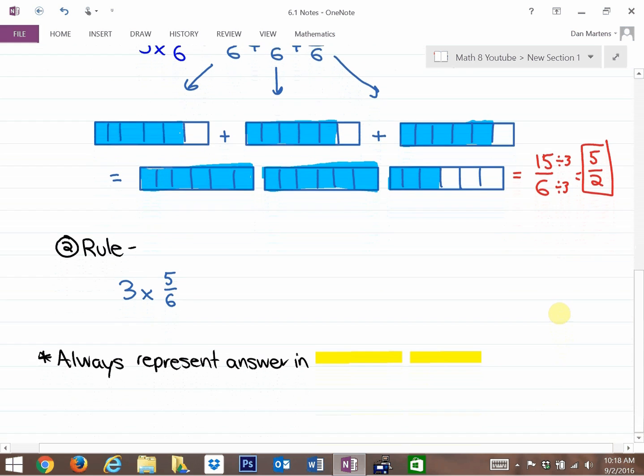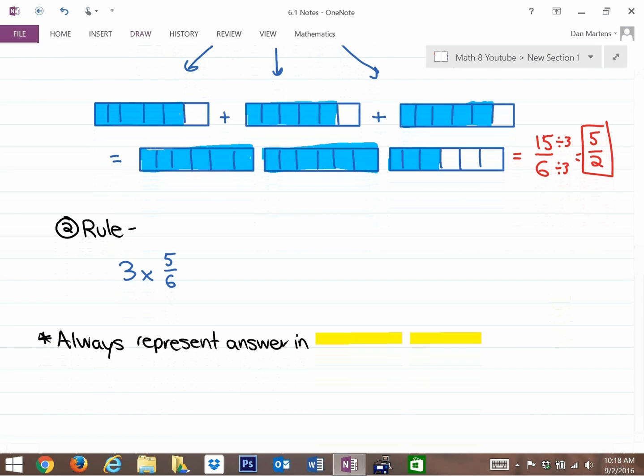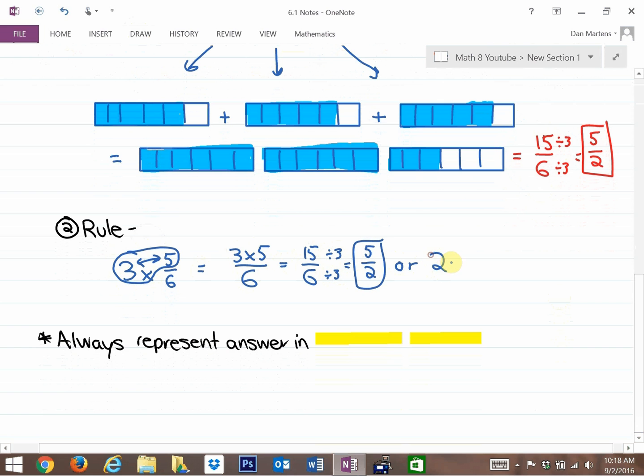A second method, beyond using diagrams to understand multiplying a whole number by a proper fraction, you can use a rule. And the rule that we've learned is, and you might want to think about how it relates to this 15 over 6, is we notice that all we have to do is multiply the whole number by the numerator and leave the denominator alone, because we have three groups of 5 sixths. We're going to multiply these two here. And that becomes 15 sixths. And then we can also reduce it like we did on the previous question. And what you'll notice here is we have an answer of 5 halves. And if you'd like to make it into a mixed number, that's also 2 and 1 half. You can see that's the same answer.